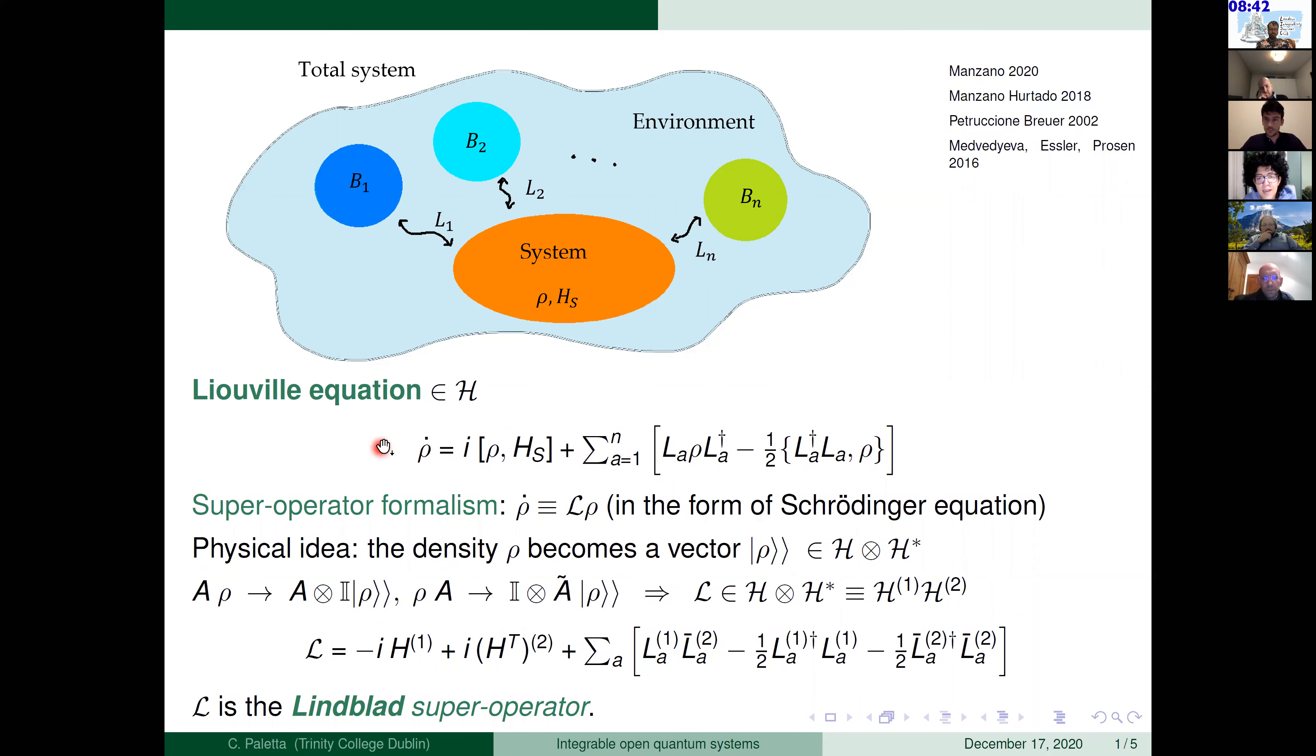Now it will be very nice to write this Liouville equation in a form similar to a Schrödinger equation. So to write an operator that will act linearly on ρ. And in order to do that, we can work in the super operator formalism. So the idea is the following. The ρ before was a matrix on some Hilbert space. Now it becomes a vector that acts on the Hilbert space tensor the dual Hilbert space.